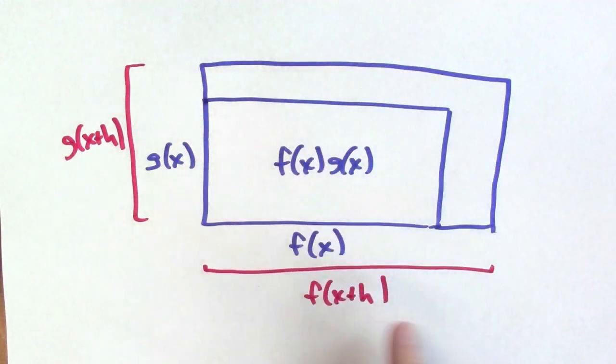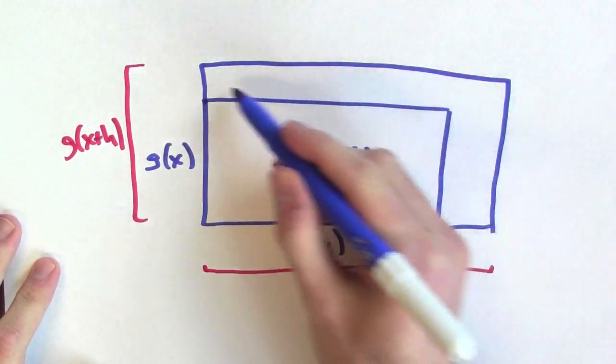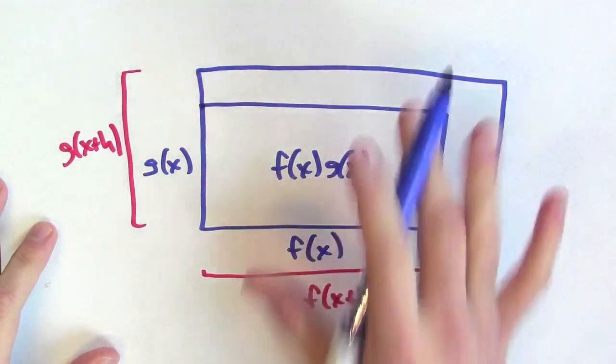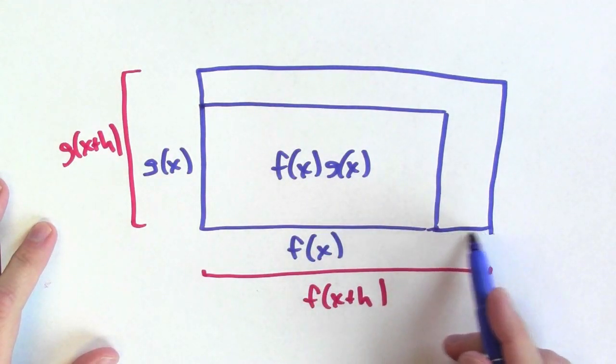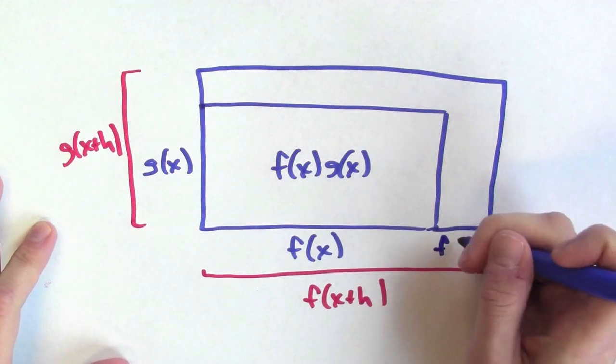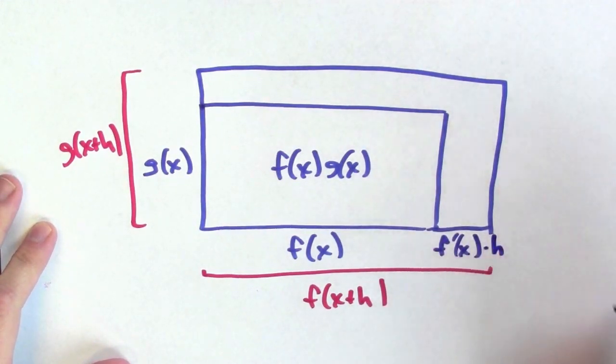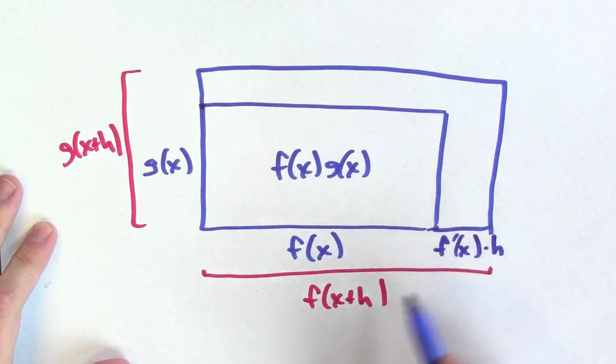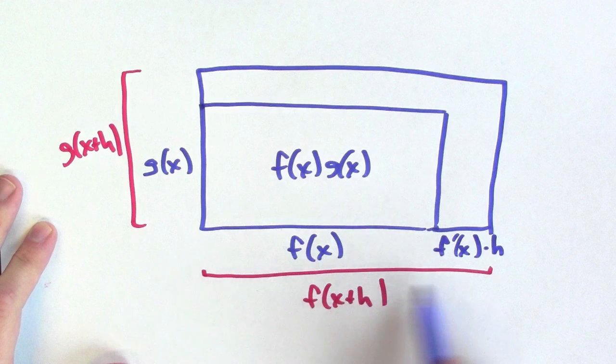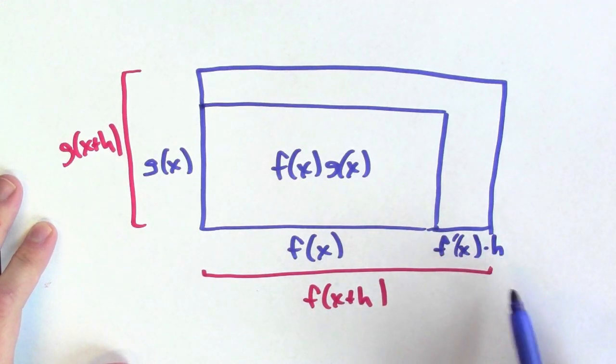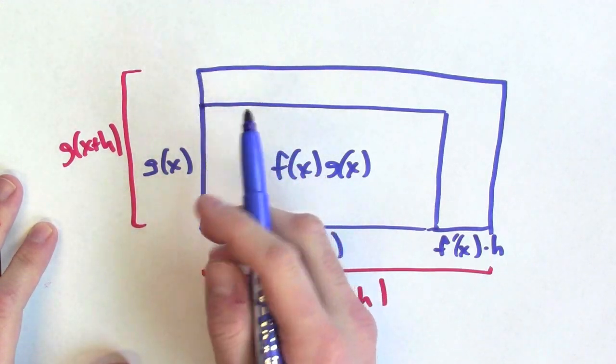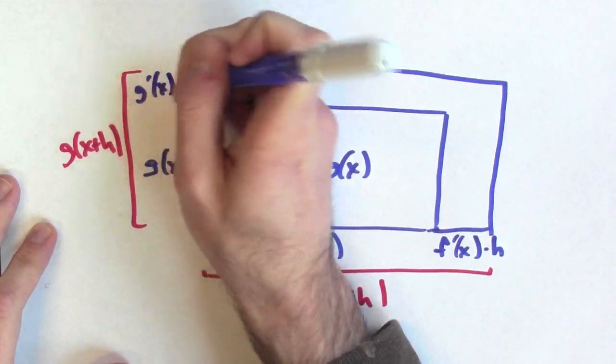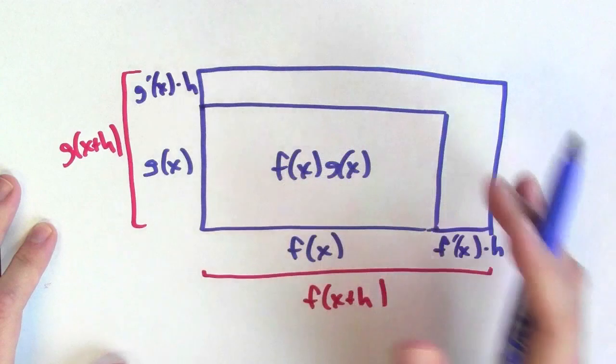Now, how does the area change when the input goes from x to x plus h? That's exactly just computing this area and this L-shaped region here. I can do that approximately. I actually know how much the base changes approximately by using the derivative, right? The derivative of f at x times the input change is an approximation to how much the output changes when I go from x to x plus h. So, this distance is approximately f prime of x times h. Same deal over here. When the input goes from x to x plus h, the output is changed by approximately the derivative times the input change. So, this length here is about g prime of x times h.